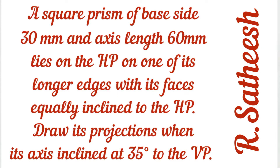Welcome students. We are discussing the projection of solids topic. The problem is: a square prism of base side 30 mm and axis 60 mm lies on the HP on one of its longer edges, with its faces equally inclined to HP. Draw its projection when its axis is inclined at 35 degrees to the VP.